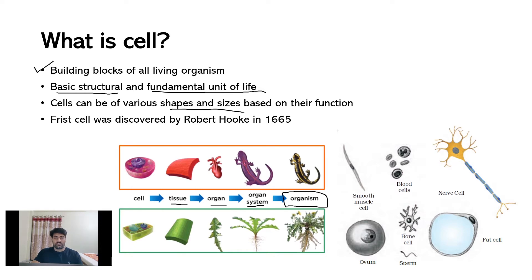Cells can be of different various shapes and sizes based on their function. For example, nerve cells are elongated, blood cells are disc-shaped, fat cells are large and spherical, sperm cells are elongated with presence of flagella for movement.